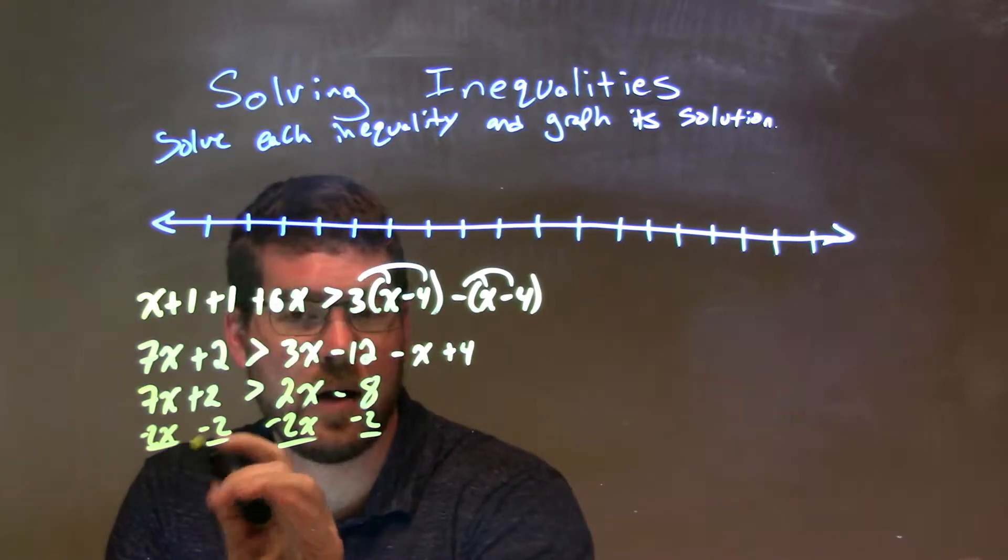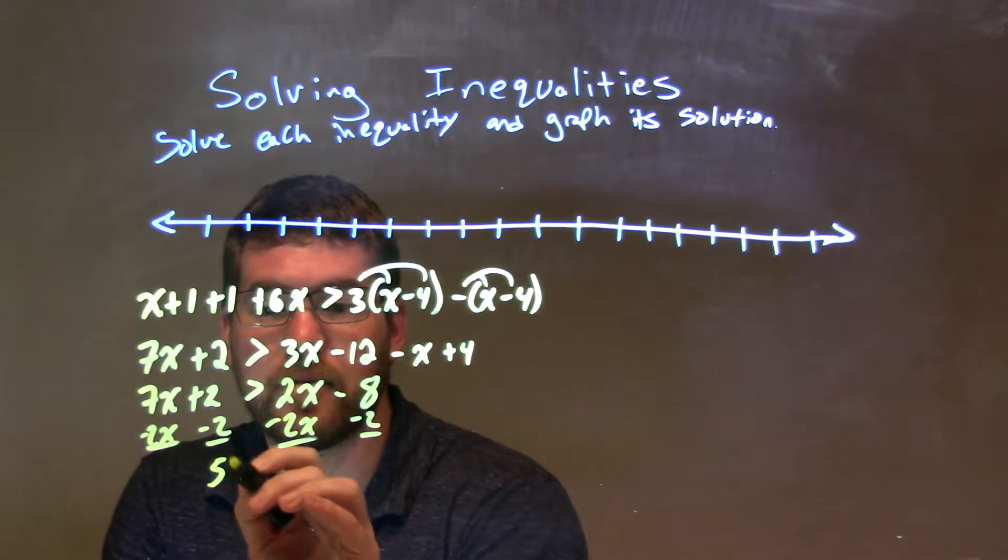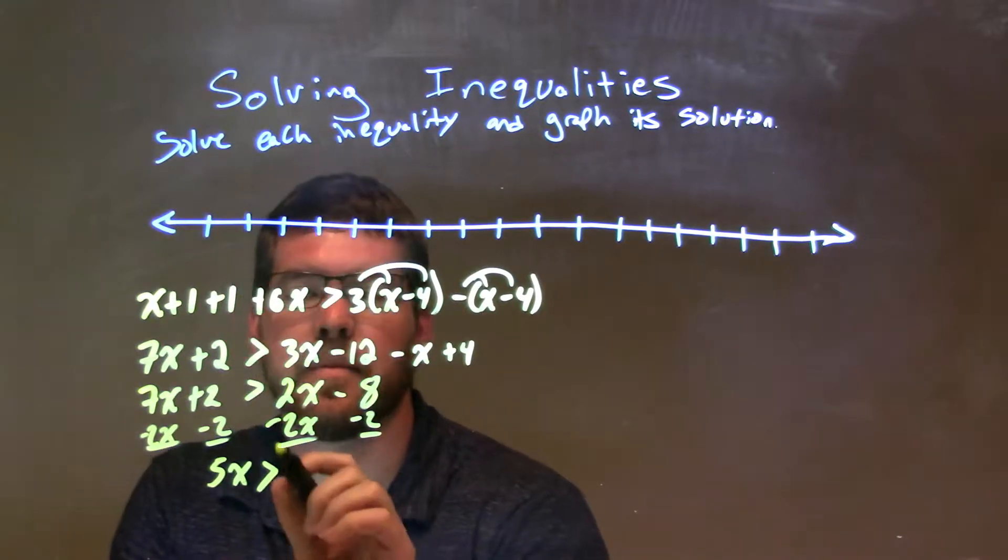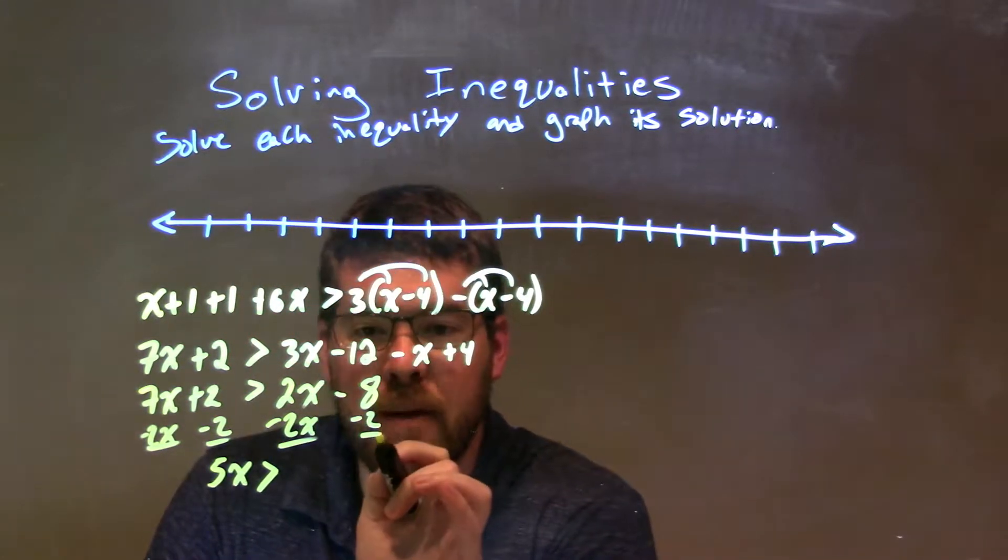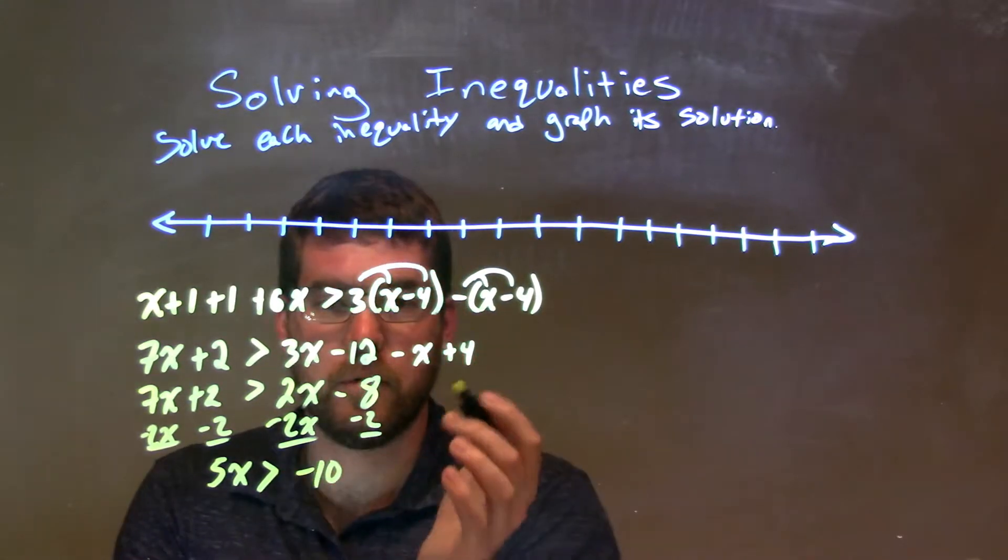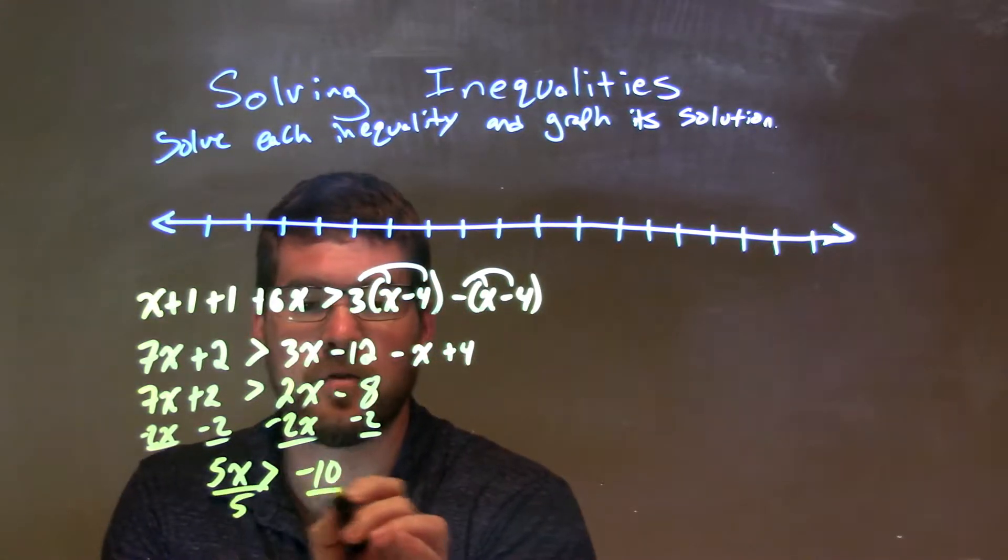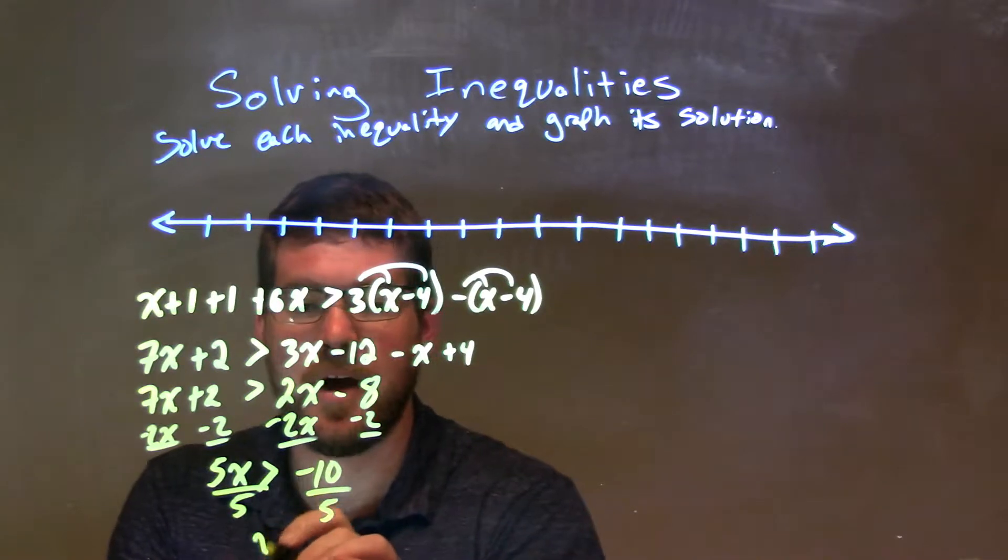7x minus 2x is 5x, and that's greater than, and then negative 8 minus 2 is a negative 10. So, what's left is divide by 5 to both sides. You get x by itself, and I have x is greater than negative 2.